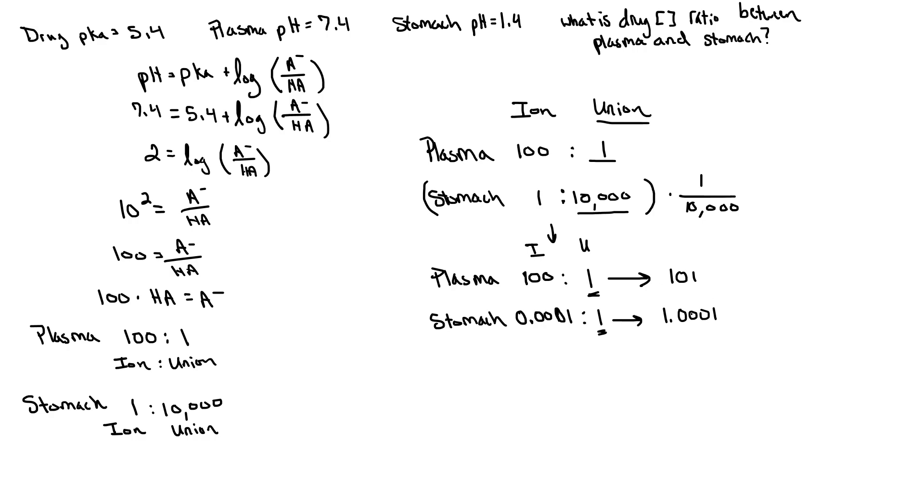And the question is just asking, what is the ratio between these two concentrations? So our ratio is going to be 101 to 1.0001. And this is going to be stomach. And this is the plasma. So in total, our ratio is about 100 to 1 plasma to stomach. And if you look at the answer, the answer on that answer sheet is going to be D.